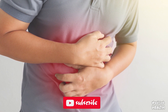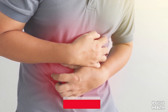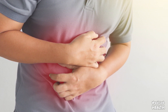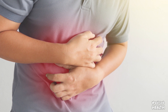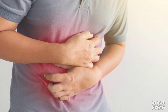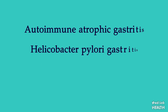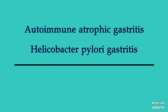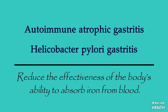Gastritis symptoms can escalate into more serious conditions. Stomach bleeding and ulcers can occur in people with gastritis who are yet to be treated. Chronic gastritis can sometimes increase the risk of developing stomach growths and tumors. Certain types of gastritis, including autoimmune atrophic gastritis and Helicobacter pylori gastritis, can reduce the body's ability to absorb iron from blood.